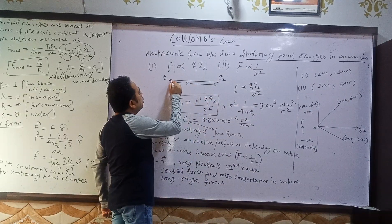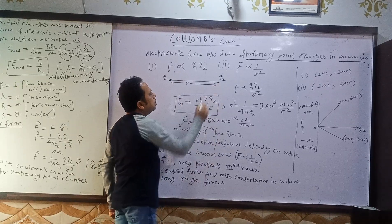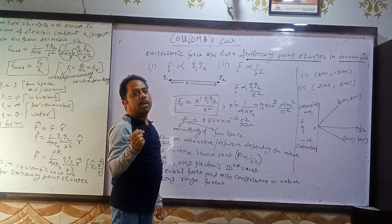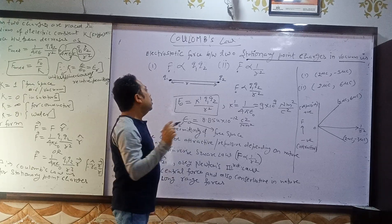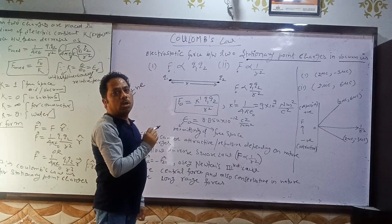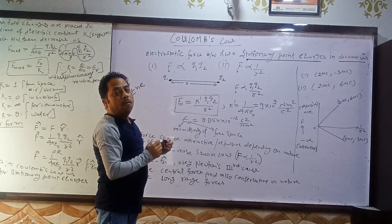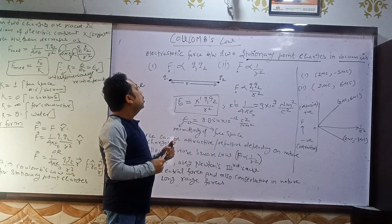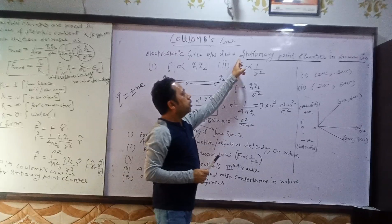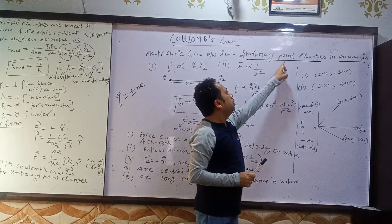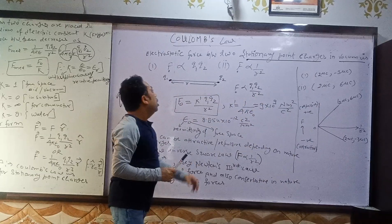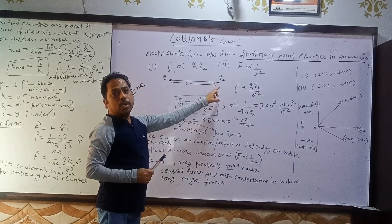These are two stationary point charges. As you all know, there are two types of charges we categorize. One is quantized, that is q is equal to plus or minus any integer multiple of e. And one was the continuous charge distribution. Coulomb's Law is applicable only for stationary point charges.